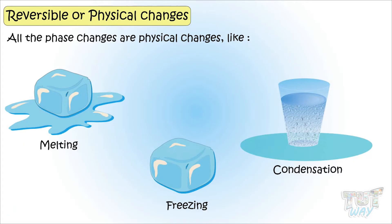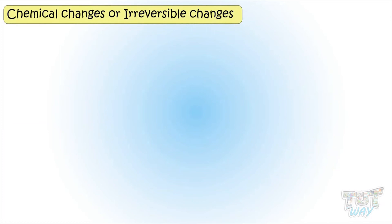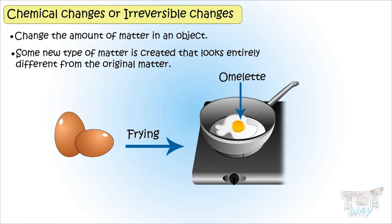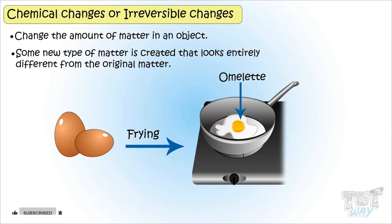Now let's learn about chemical changes or irreversible changes. Chemical changes are those changes that change the amount of matter in an object, and some new type of matter is formed that looks entirely different from the original matter, and they are irreversible — that is, cannot be reversed once done.